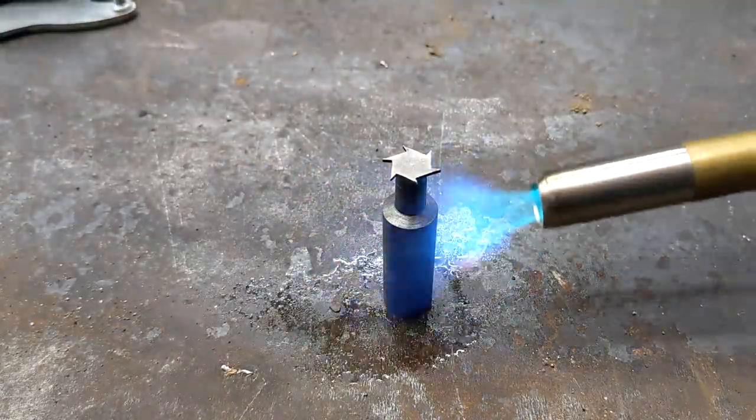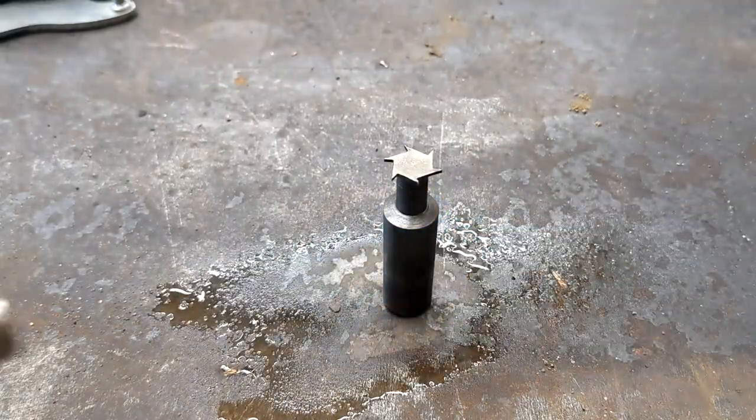With the teeth cut, I hardened it. And thankfully nothing broke off. Then I tempered it to a deep straw color, which seemed to be good for cutting tools.